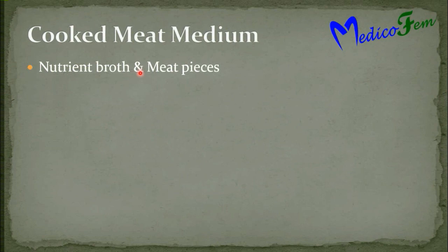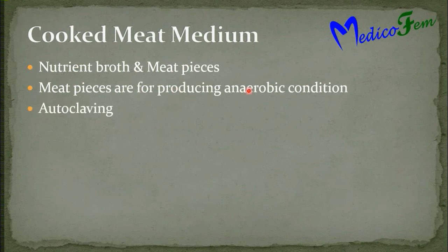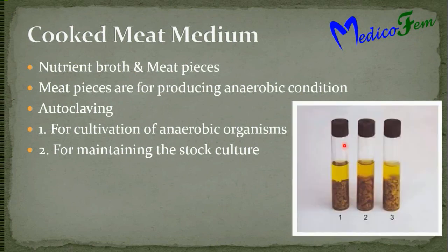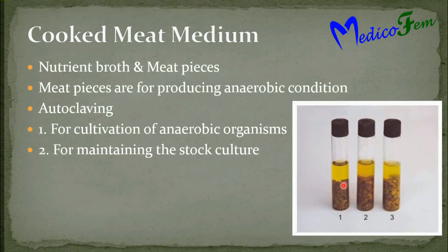Cooked meat medium is nutrient broth plus meat pieces. Meat pieces provide the anaerobic condition. It is sterilized by autoclaving and used for anaerobic organisms. It is also used to maintain stock cultures. After inoculation, the medium is overlaid with sterile oil, which prevents exchange of oxygen between the environment and the medium. The remaining oxygen in the medium is utilized by the meat. If anaerobic organisms are present, they utilize the meat anaerobically. If they are proteolytic, the meat color changes to dark brown or black. If they are saccharolytic, the meat color changes to pink.